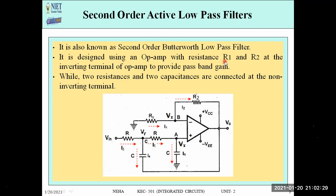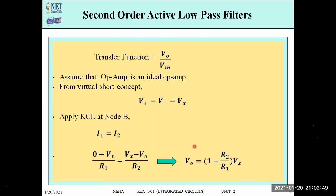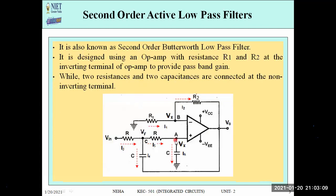It is designed using an OPAMP with resistances R1 and R2 at the inverting terminal to provide passband gain, and two resistances and two capacitors at the non-inverting terminal. We need to calculate the transfer function V0/Vin. Before the analysis starts, we assume the OPAMP is an ideal OPAMP. If it is ideal, it follows the virtual short concept, meaning node A and node B are at the same potential VX.